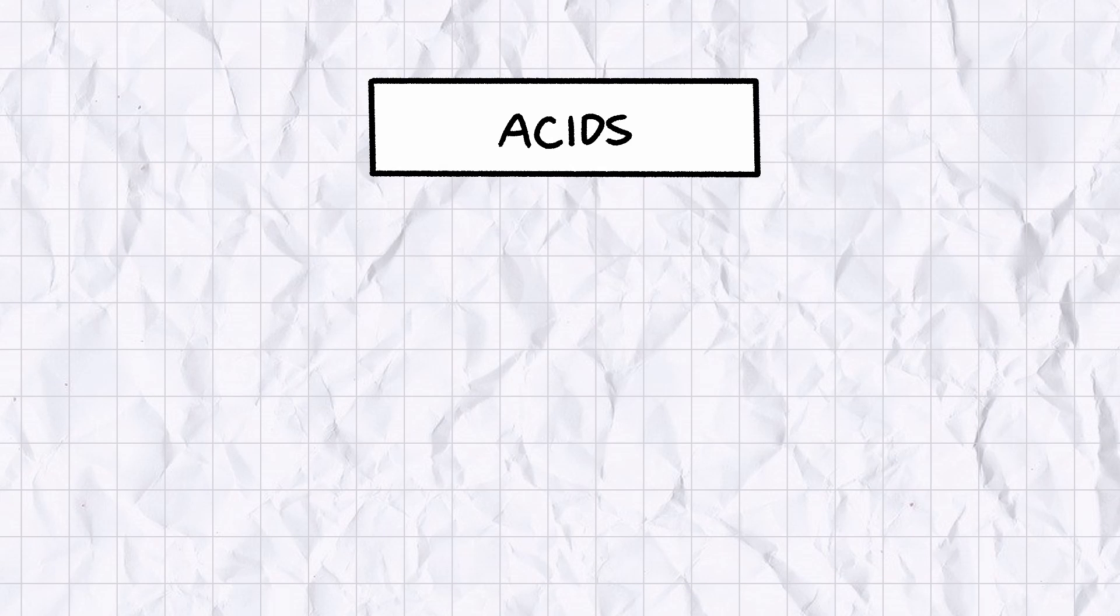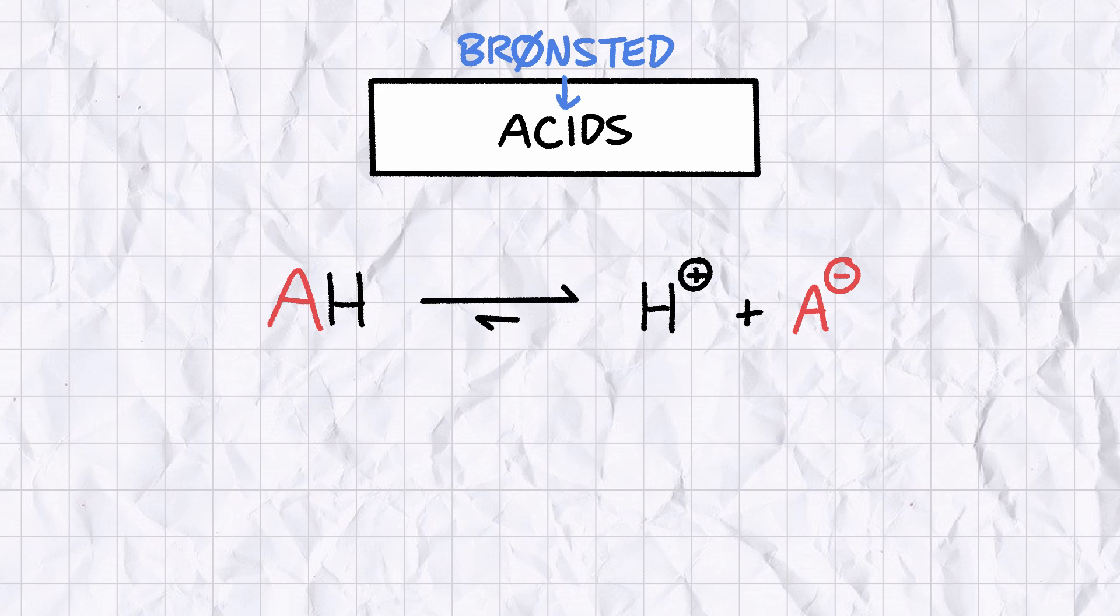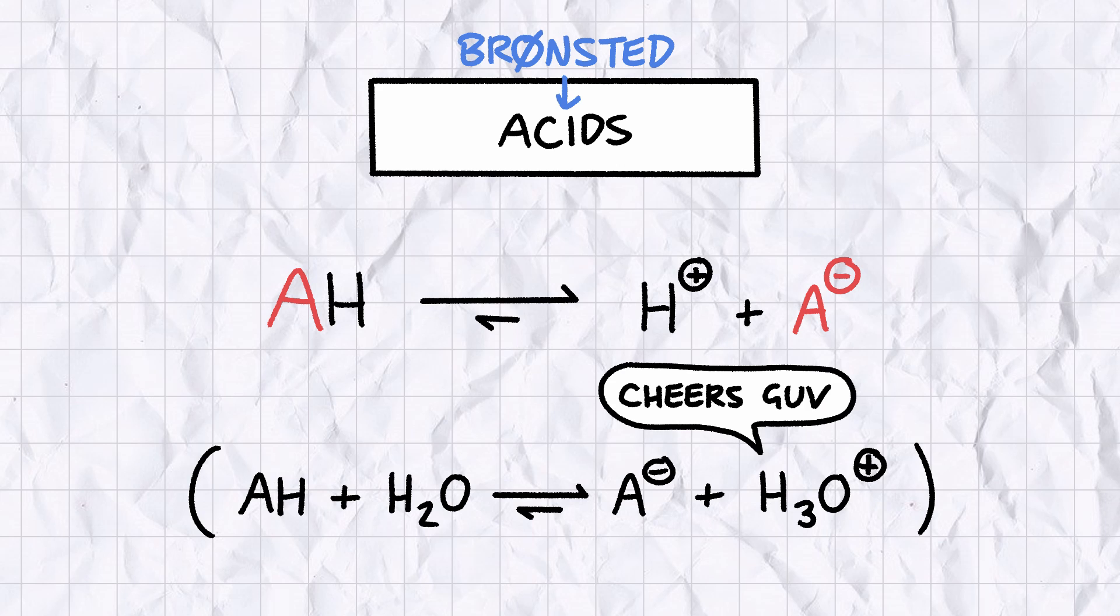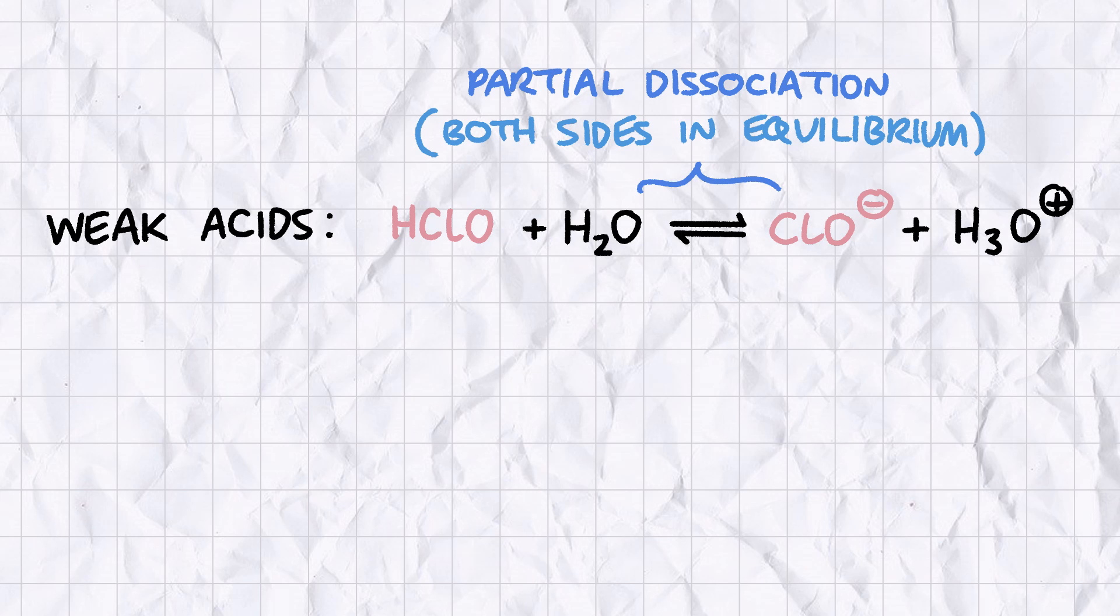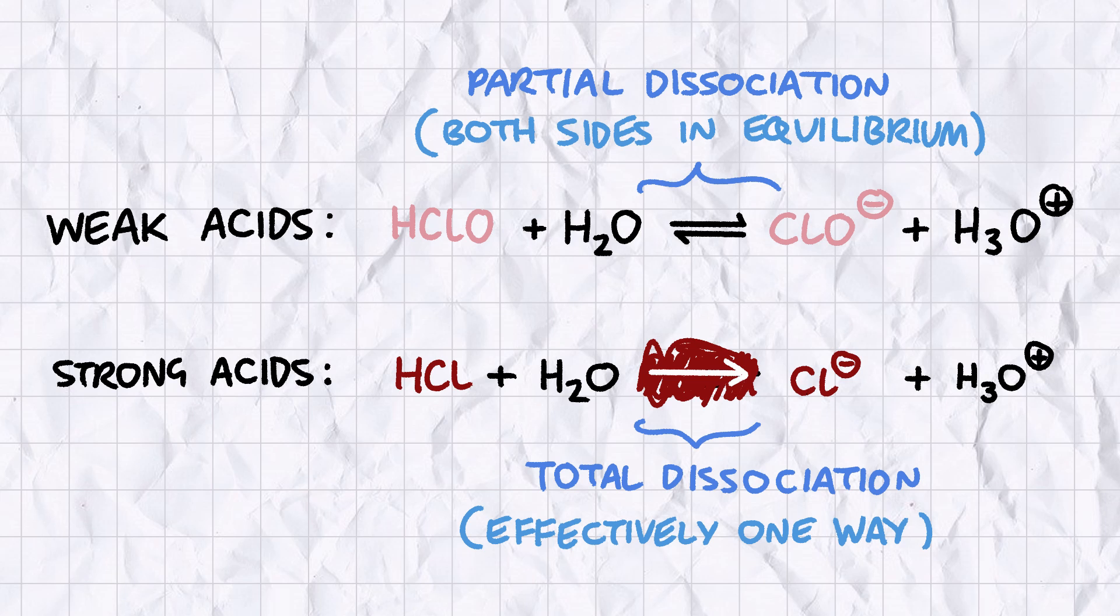In chemistry, an acid, more specifically a Bronsted acid, is a substance that dissociates in solution by donating an H+ ion to another species, usually water, which accepts the ion to become H3O+. Weak acids like hypochlorous acid aren't too fussed about donating protons and will only undergo partial dissociation, leaving the system in a state of equilibrium. Strong acids undergo nearly total dissociation in the presence of solvent, and in hydrochloric acid's case, dissociation to Cl- is so favorable that the reaction practically never runs in reverse.